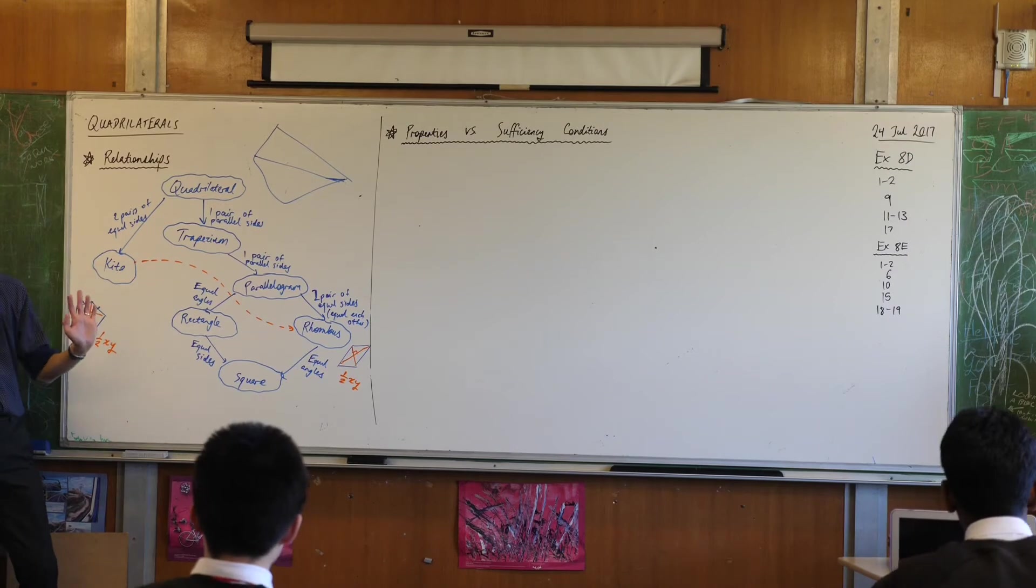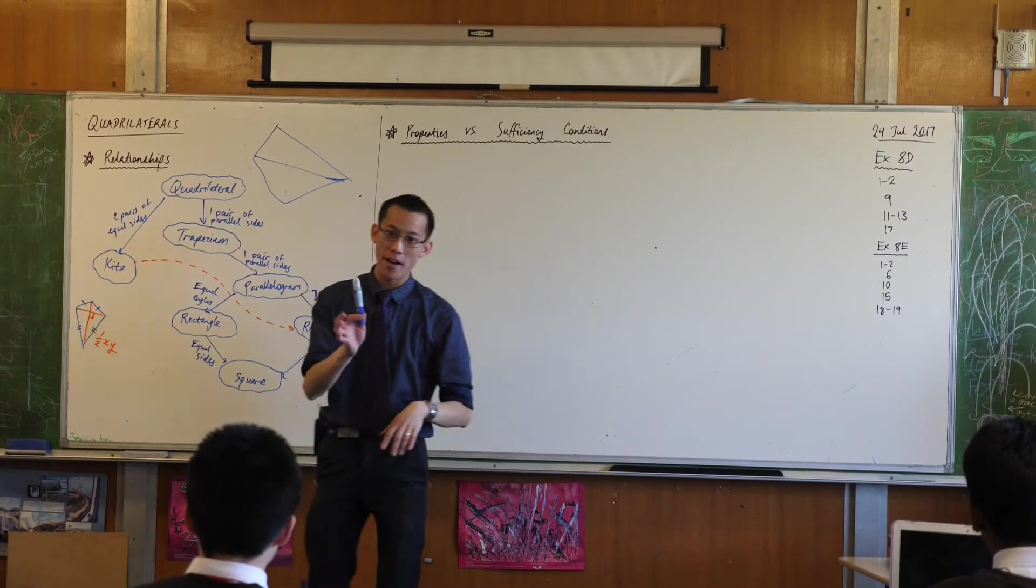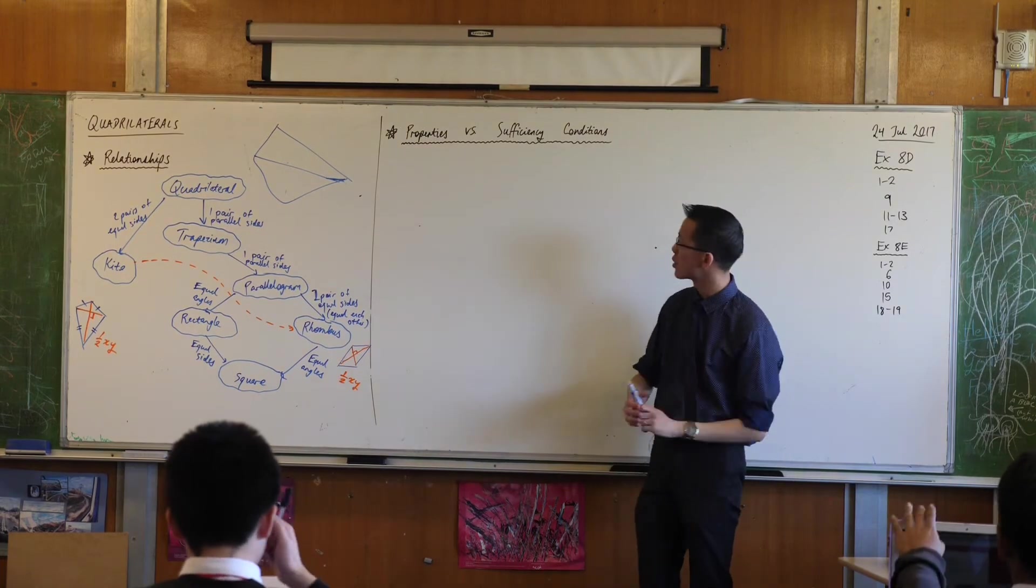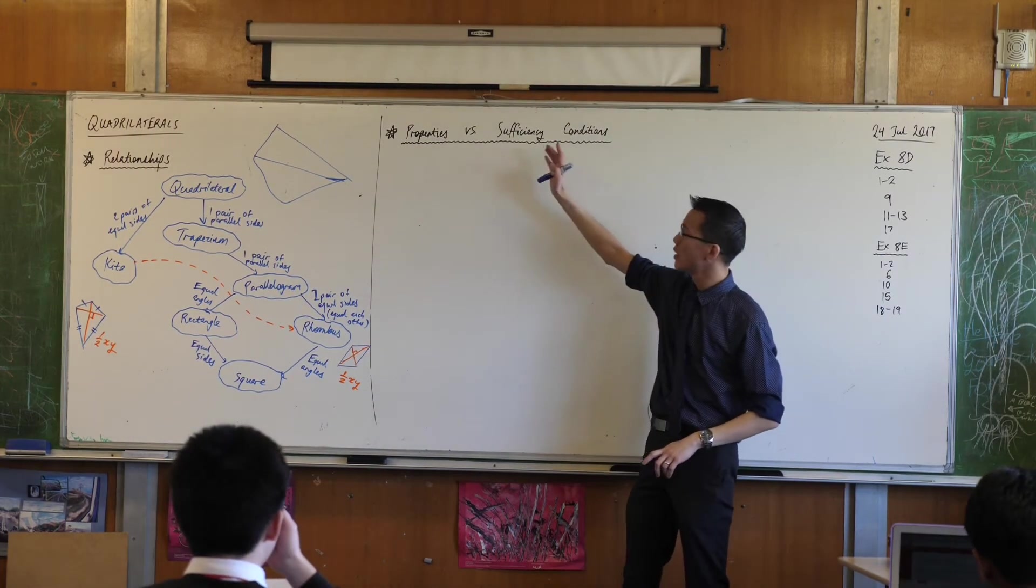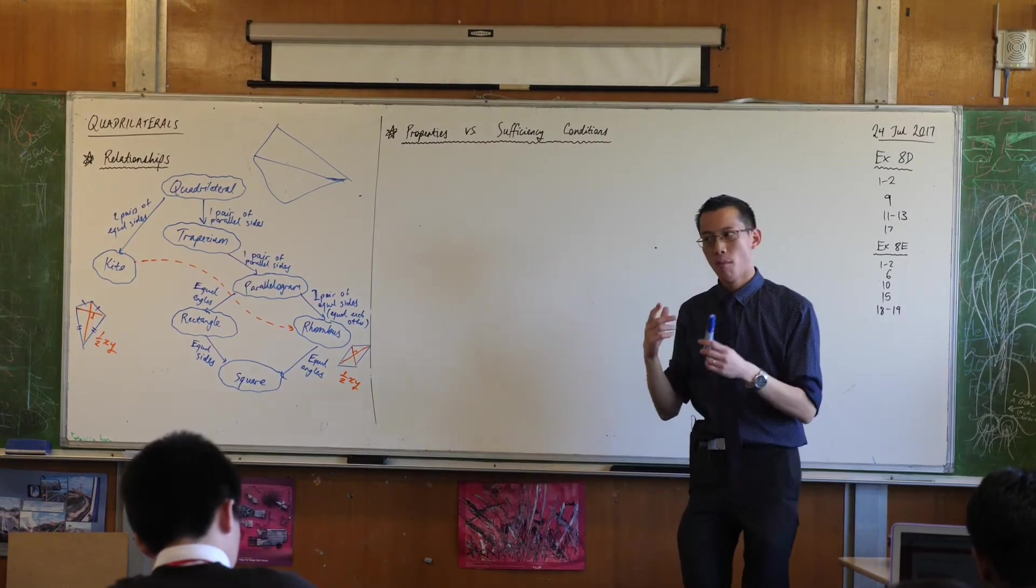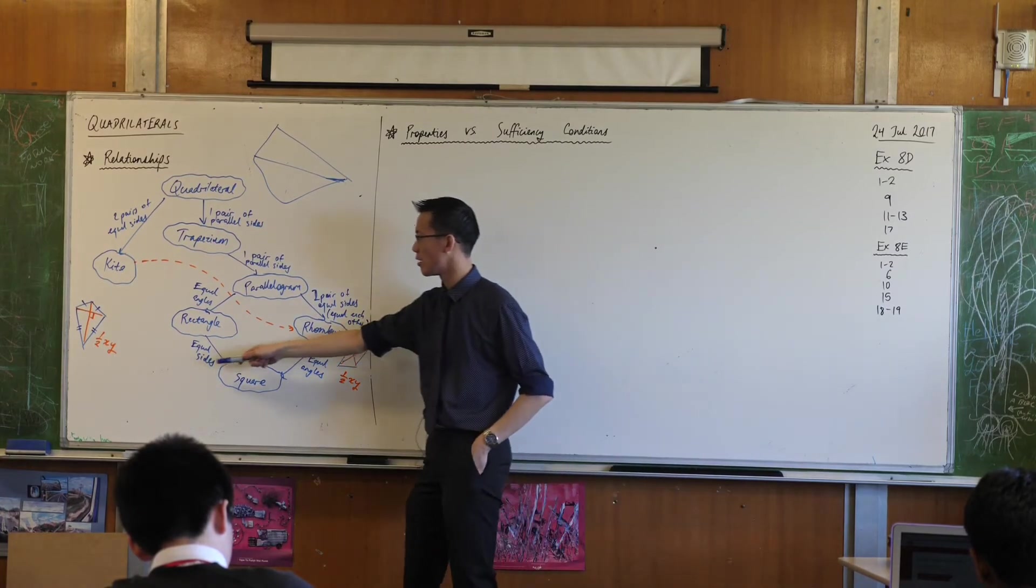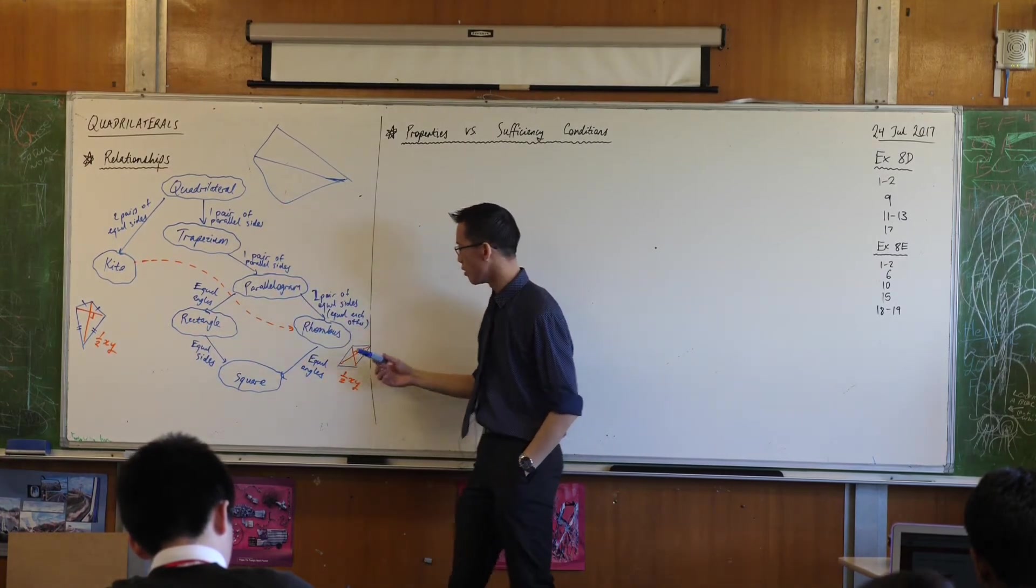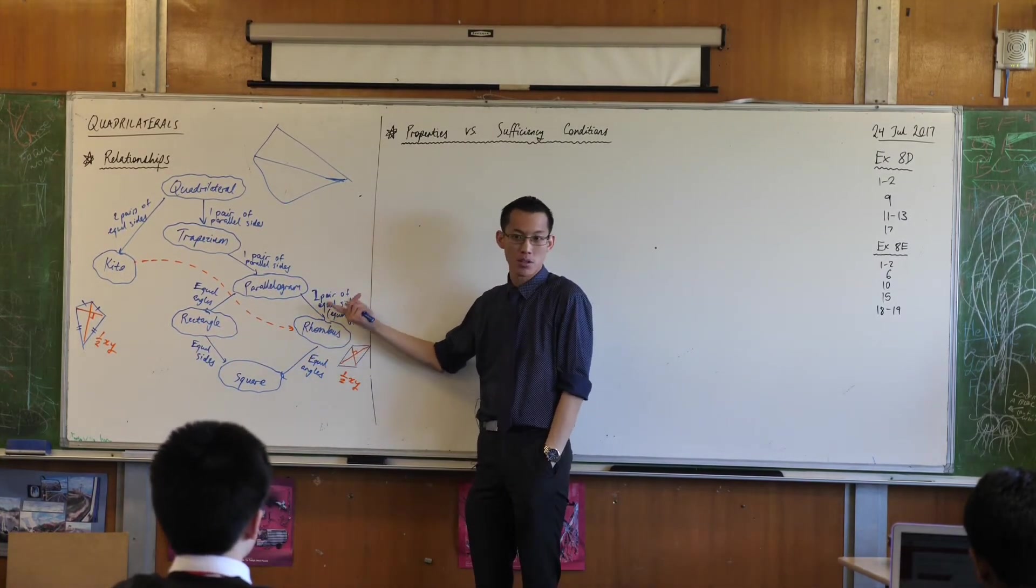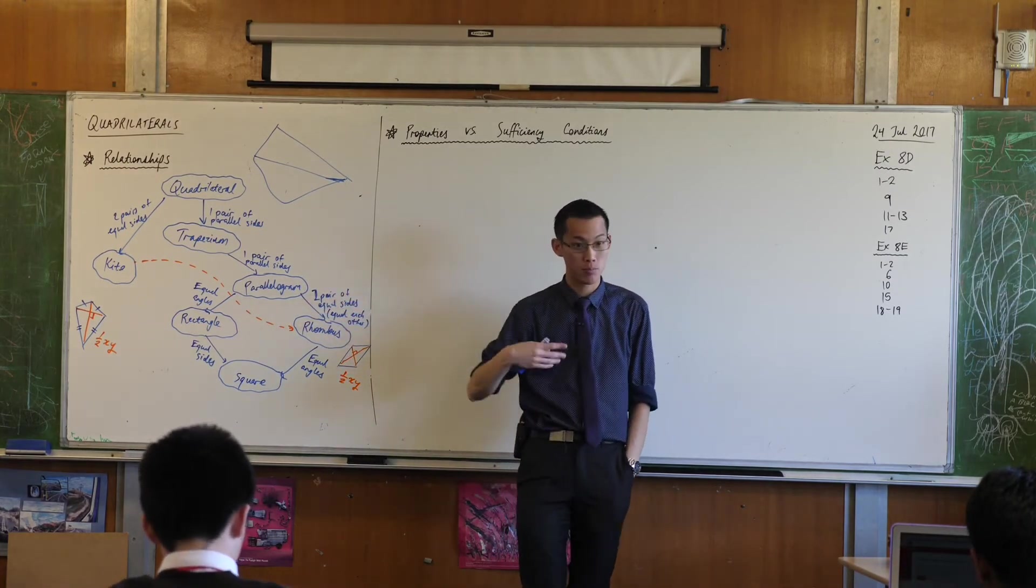Okay, so that's all just to remind you of what all these shapes are. I want to make one final comment as you get into these proofs, which is just to distinguish between these two things. Properties and sufficiency conditions. Properties are features of a shape. So we've named a whole bunch of them here. It's like, what makes a rhombus a rhombus? One of the things it's got all equal sides. That's one of its properties.